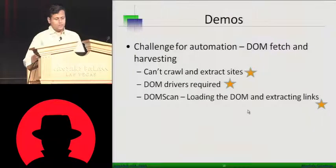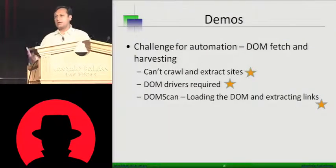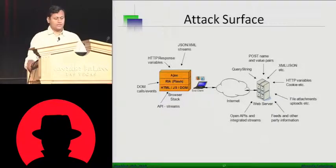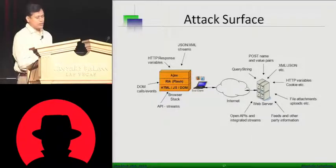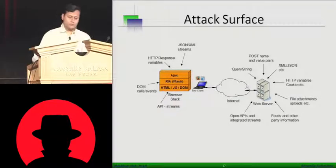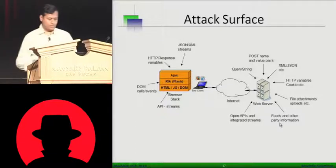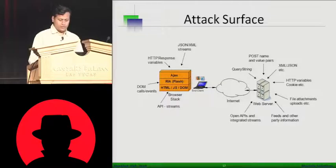That's the first objective for the assessment: if we come across 2.0 sites, we should have tools to handle DOM-driven sites. We are now in control of IE and can control the whole thing. The attack surface on the client side includes AJAX, RIA, HTML, JS, DOM, etc. On the server side, you have query string, post name, XML, JSON, etc. We are going to focus on DOM calls and events, but there is also an implication of DOM calls to back-end XML and JSON, as well as feeds and third-party information.